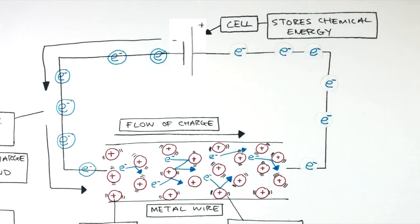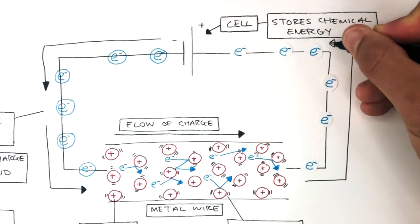These electrons continue to flow through the metal wire, colliding with the positive metal ions until they arrive at the positive terminal of the cell.